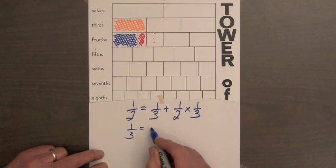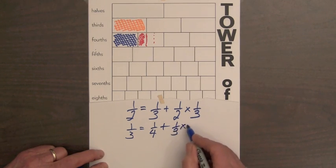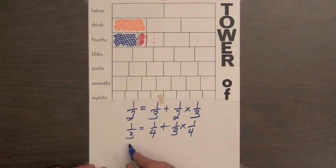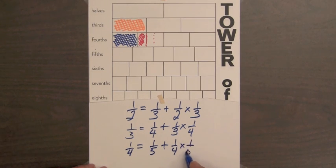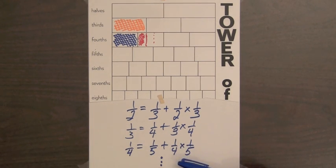One-third equals one-fourth plus one-third times one-fourth. Writing the next equation would be one-fourth equals one-fifth plus one-fourth of one-fifth. Students might want to continue this pattern and do the computation to see if both sides of each equation are equal.